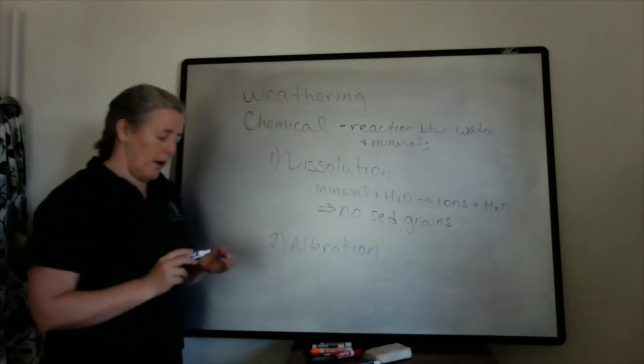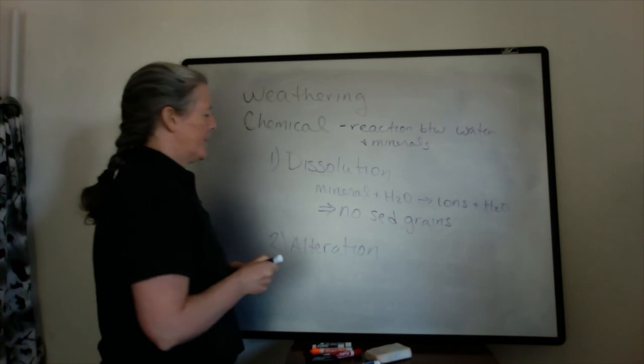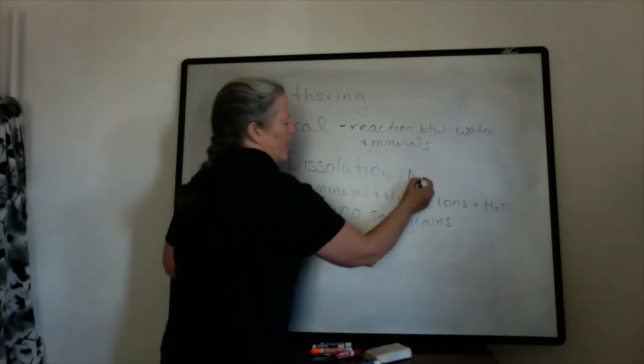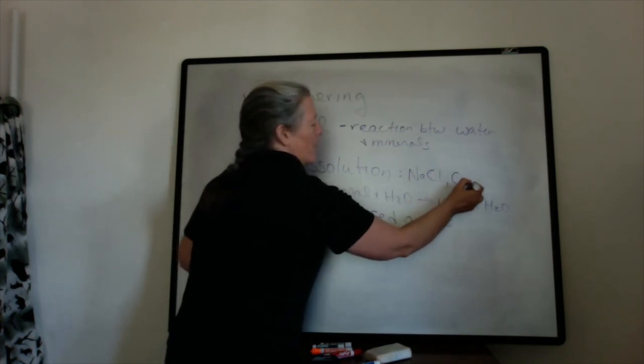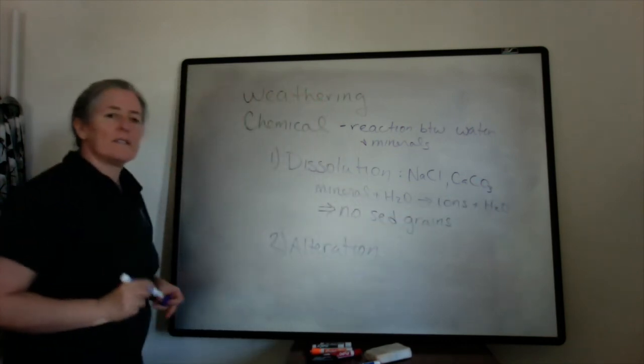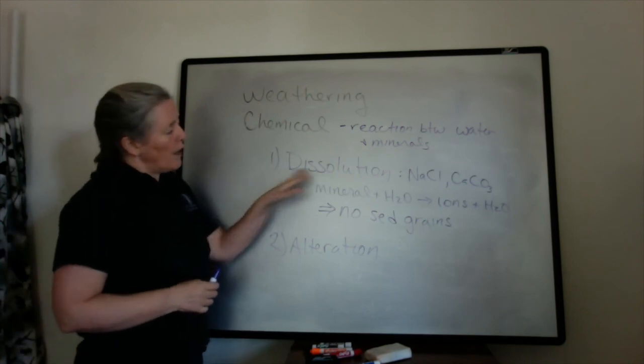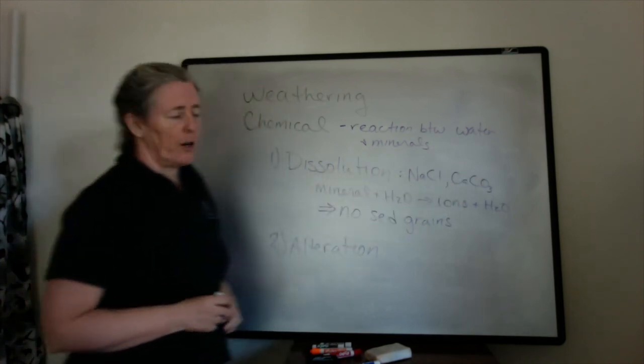However, you can produce grains. One mineral that dissolves quite well, an example would be halite, which is basically table salt. Or carbonate minerals, calcium carbonate, are ones that tend to dissolve. So those will just go to sodium and chlorine and calcium and bicarbonate ions.